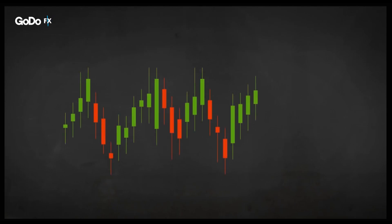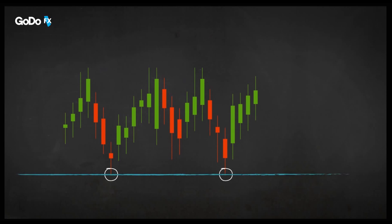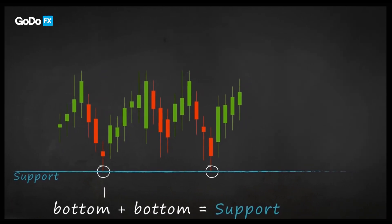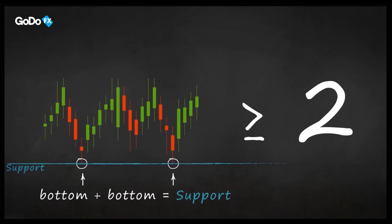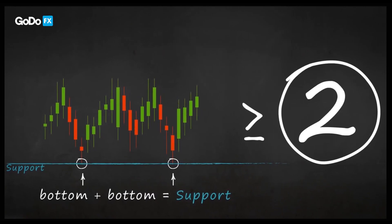Have a look at the candlestick chart. Try to spot all the bottoms located on the same level. Simply connect them together, and there you go. You have drawn a support line. Remember that you'll need to have at least two bottoms touching the same line.